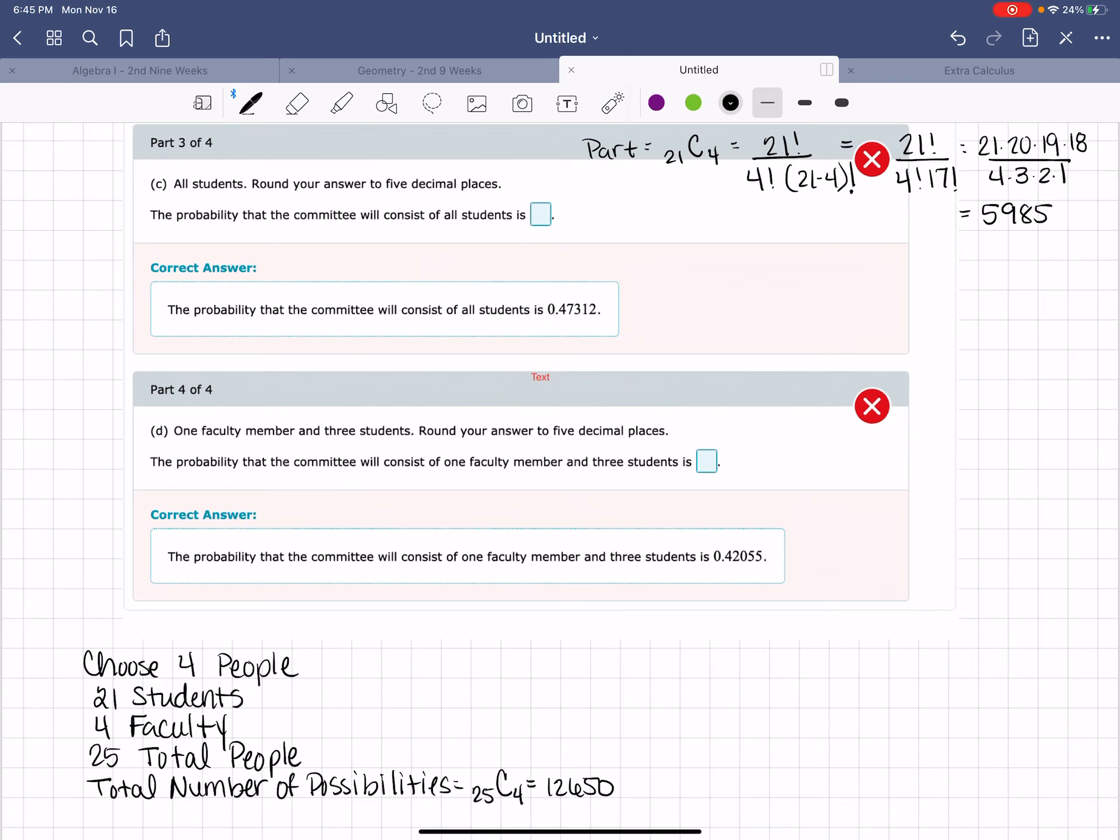That's the part. Remember, once again, we are finding the probability. And so I know my probability is going to be 5,985 out of the whole, which is going to be 12,650.